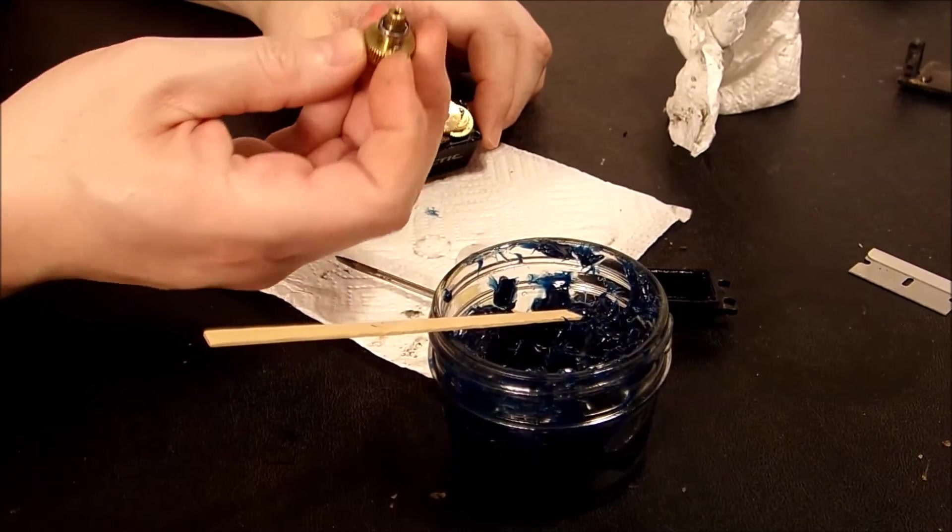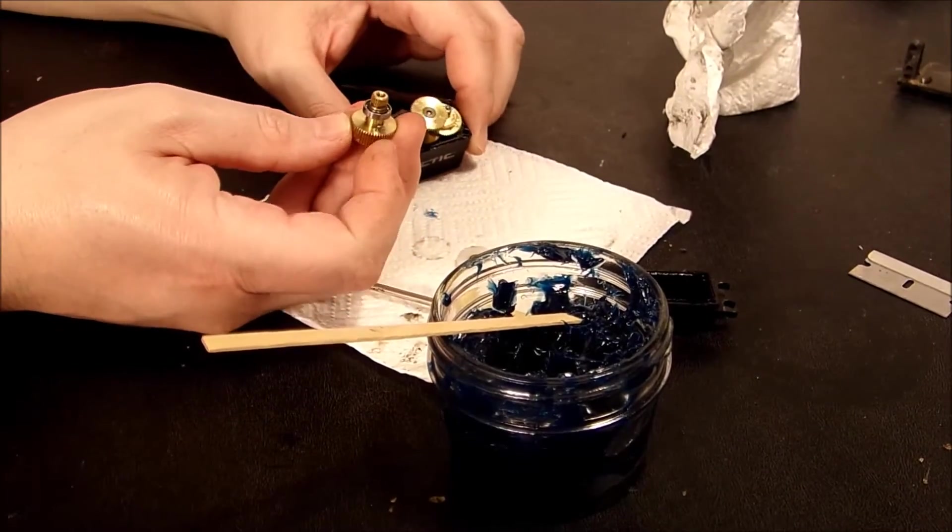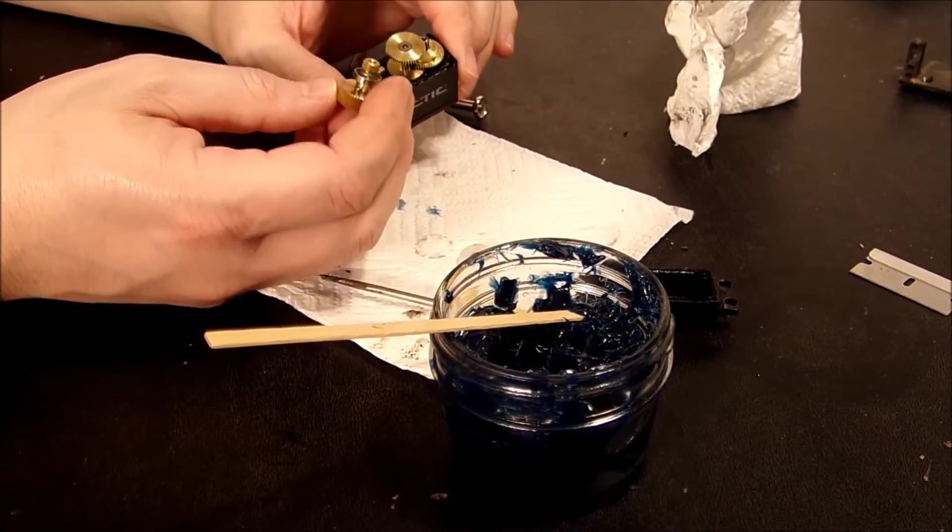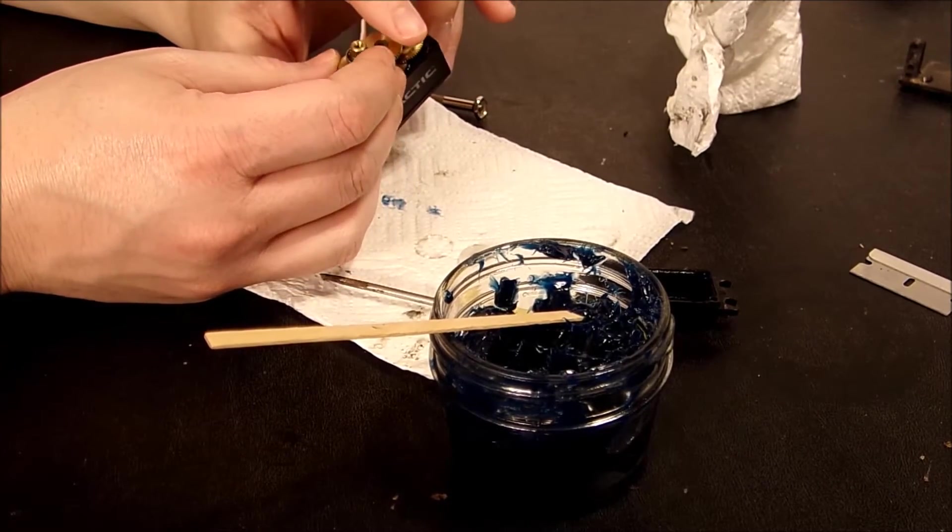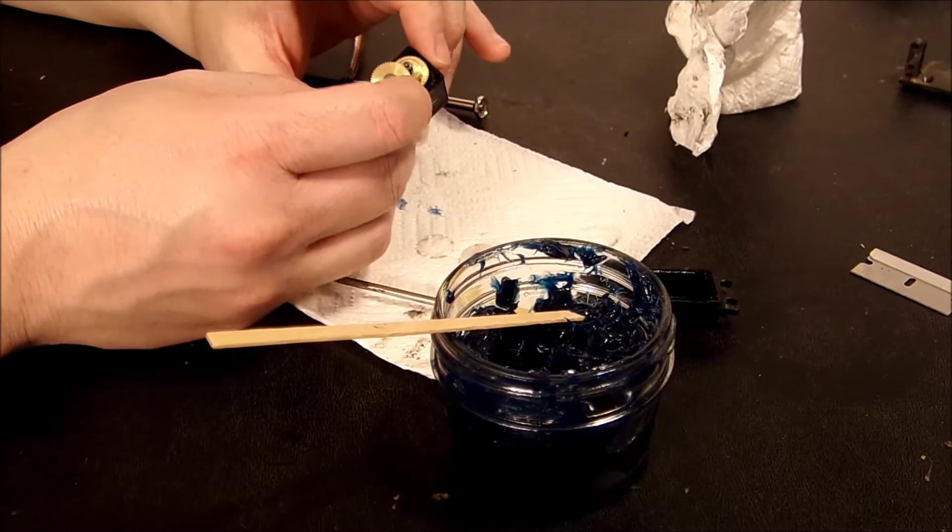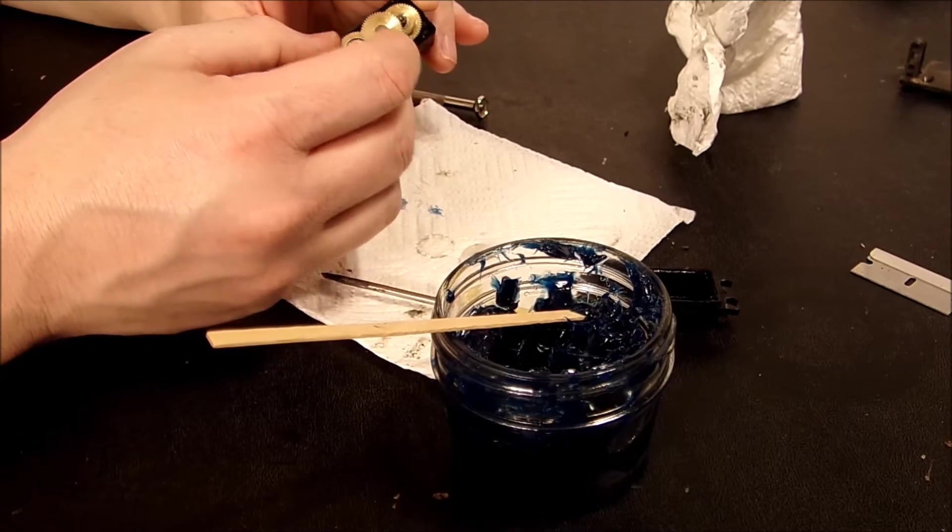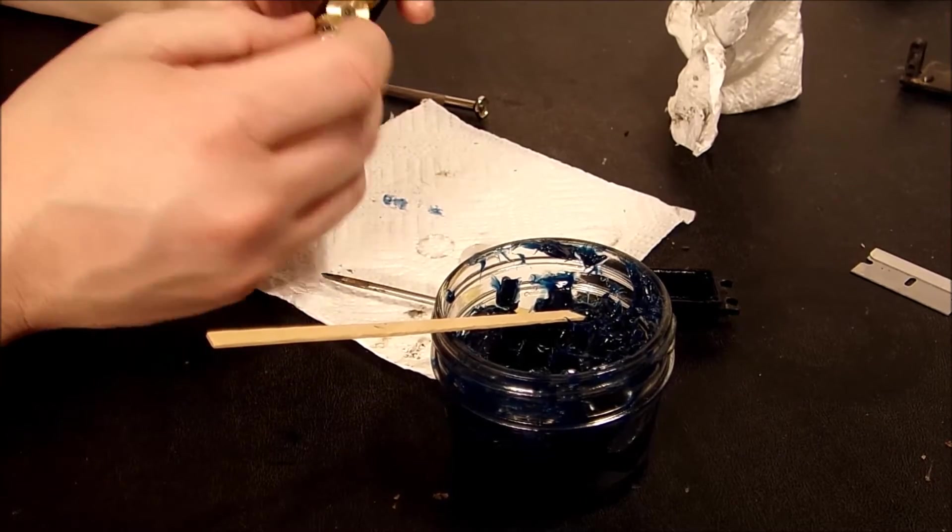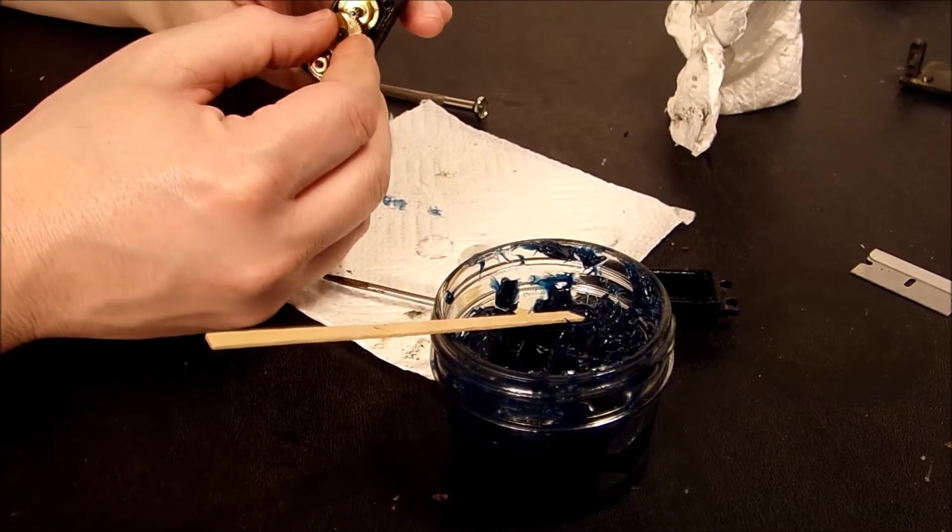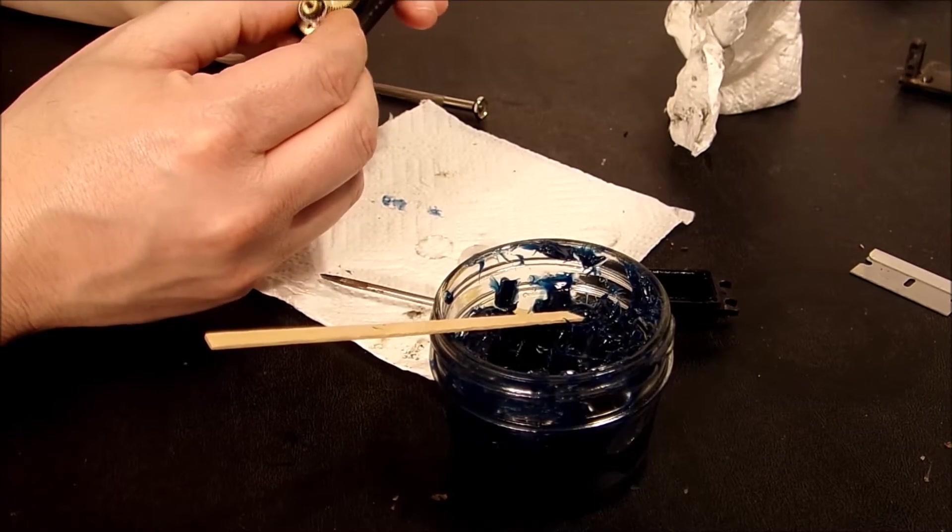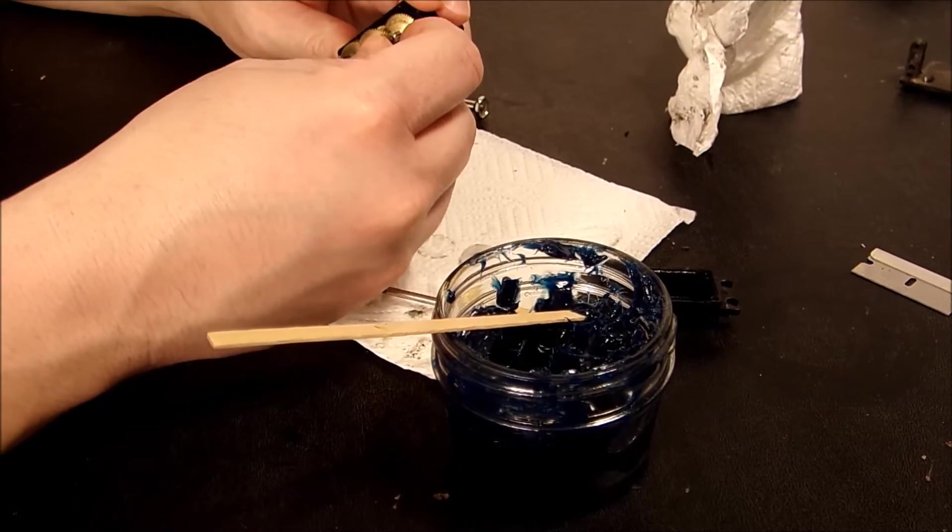Remember where this piece right here, this little nub, was pointed whenever you took it apart because this has to face back the way it was. Whenever I took this apart it was facing towards the outside, so face it back towards the outside again, just gotta get it lined up here so it'll drop down onto the pot. And there we go, make sure this pin drops into place.